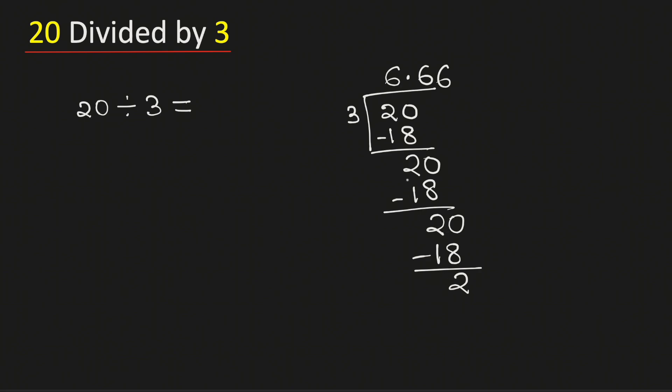As we keep getting 2, so we will be having 6 here. Therefore, 20 divided by 3 is equal to 6.666 dot dot dot. This can be written as 6.6 bar.